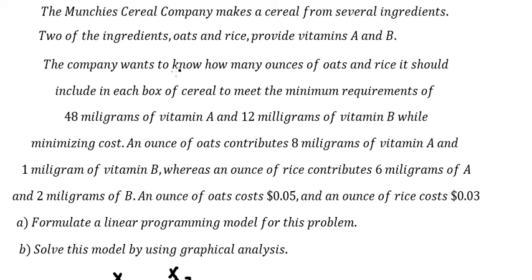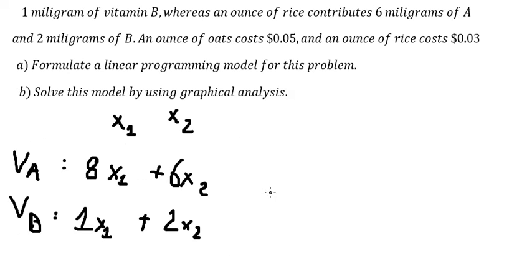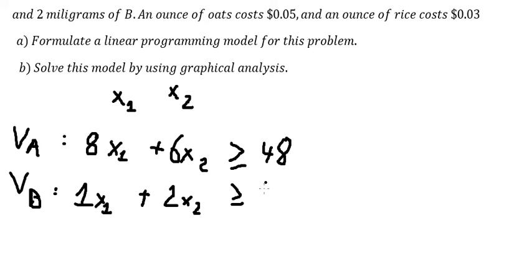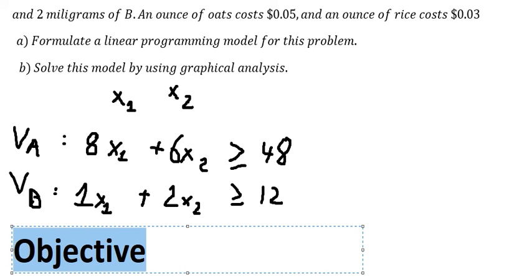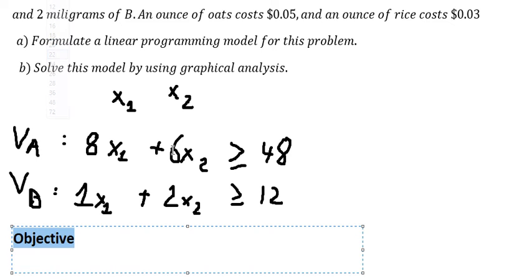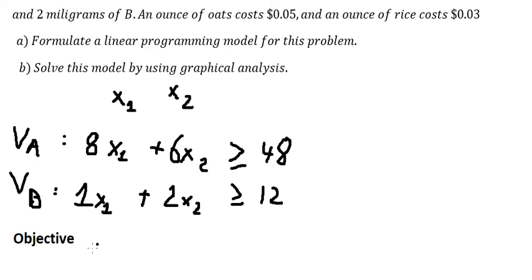The minimum for vitamin A is 48, so that should be greater than or equal to 48. The second constraint is greater than or equal to 12. The next one is about the objective function — we want to minimize the cost, so the cost for s1 is 0.05*s1.